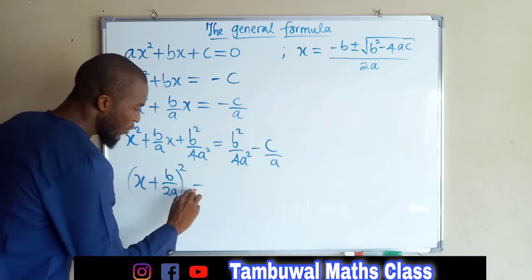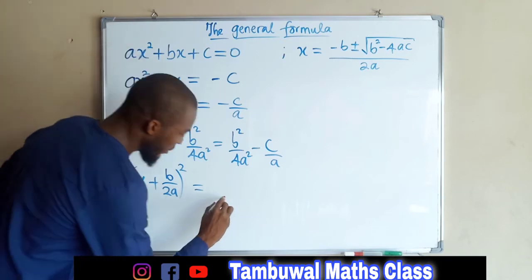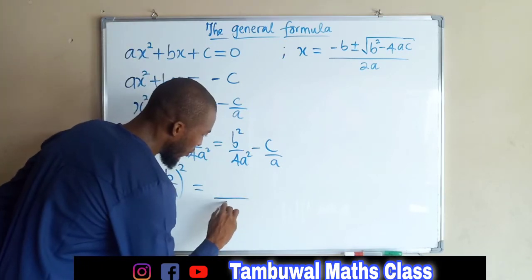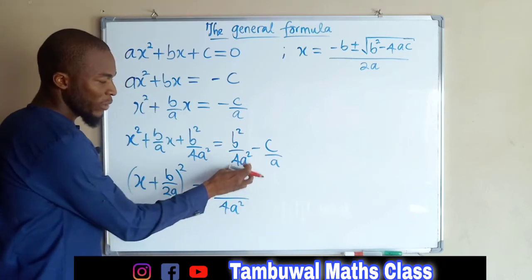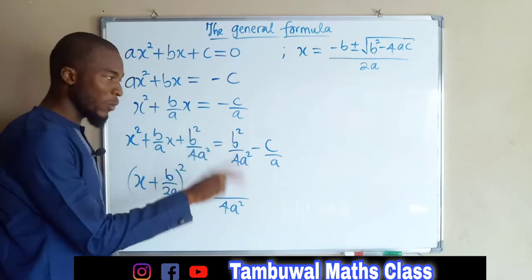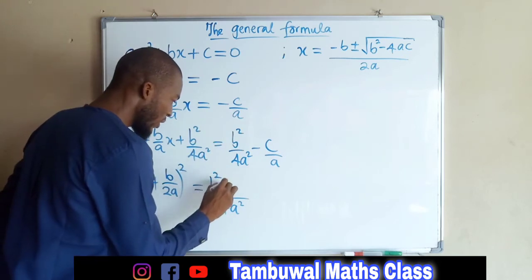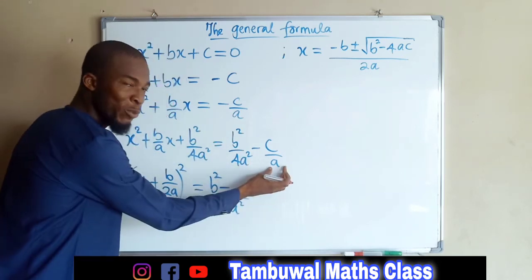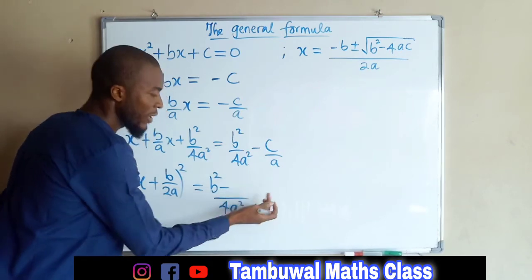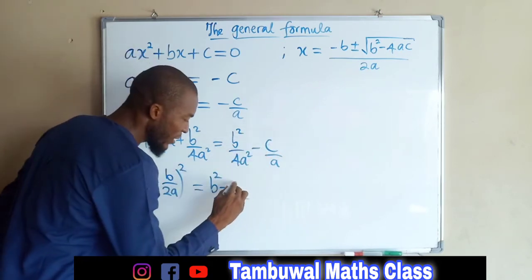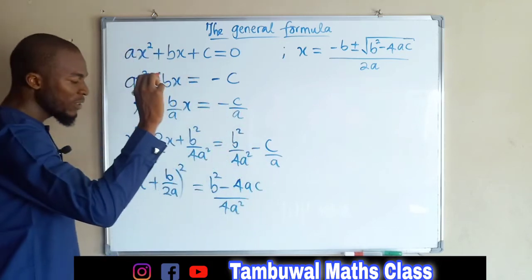This is equal to — we can now combine the right-hand side. They have a common LCM, which is 4a squared. Plugging 4a squared in, you obtain 1 times b squared, giving b squared, then minus — plugging a gives 4a, and 4a times c gives 4ac. So the right-hand side becomes b squared minus 4ac, all over 4a squared.